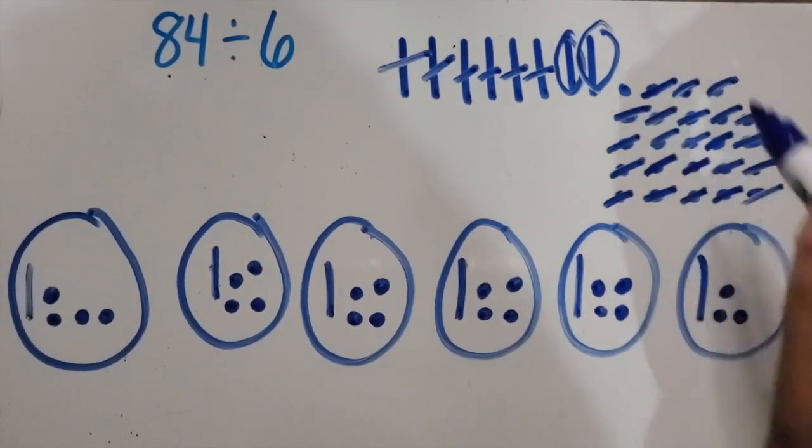At this point we have a smaller amount, so we want to make sure there's enough—one, two, three, four, five, six—so there is enough. I'm going to add one more one to each group. So we've used up all of the tens and all of the ones.